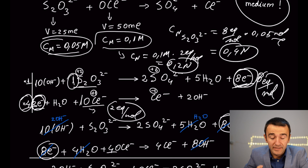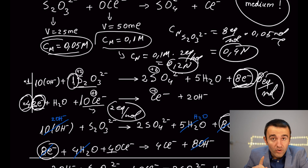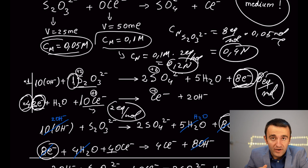In redox reactions, keep track of the electrons donated or accepted per mole. If there are more than one mole in the balanced equation, simplify to find equivalents per single mole. That's it for this video — hope it helped clarify normality. Thank you for watching and see you in the next video.